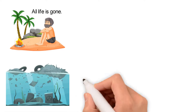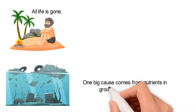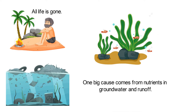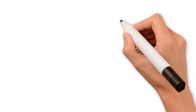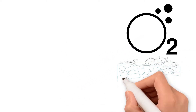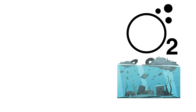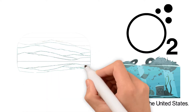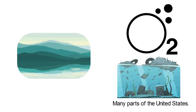One big cause comes from nutrients in groundwater and runoff. These nutrients cause too many algae to grow. Eventually, the algae die and decompose, using up the oxygen other life forms need to live. There are dead zones in many parts of the United States. The largest of these is in the northern Gulf of Mexico. Dead zones can also occur in other large bodies of water, such as the Great Lakes.